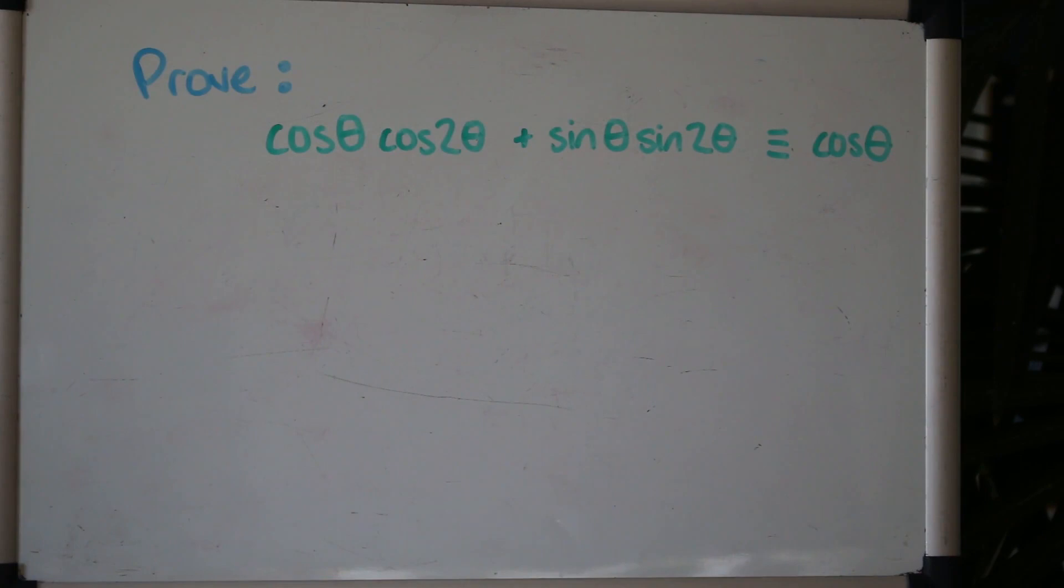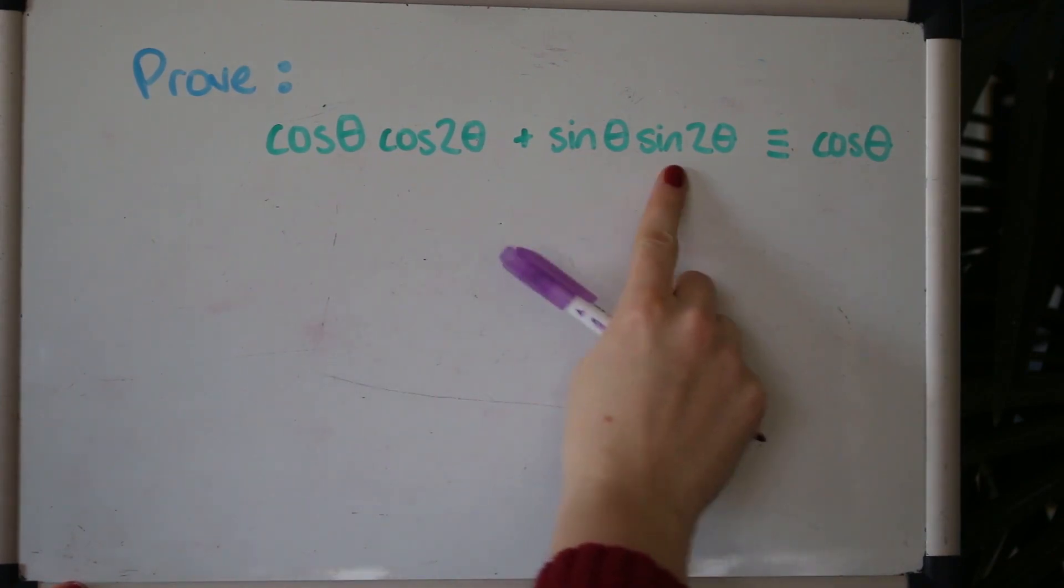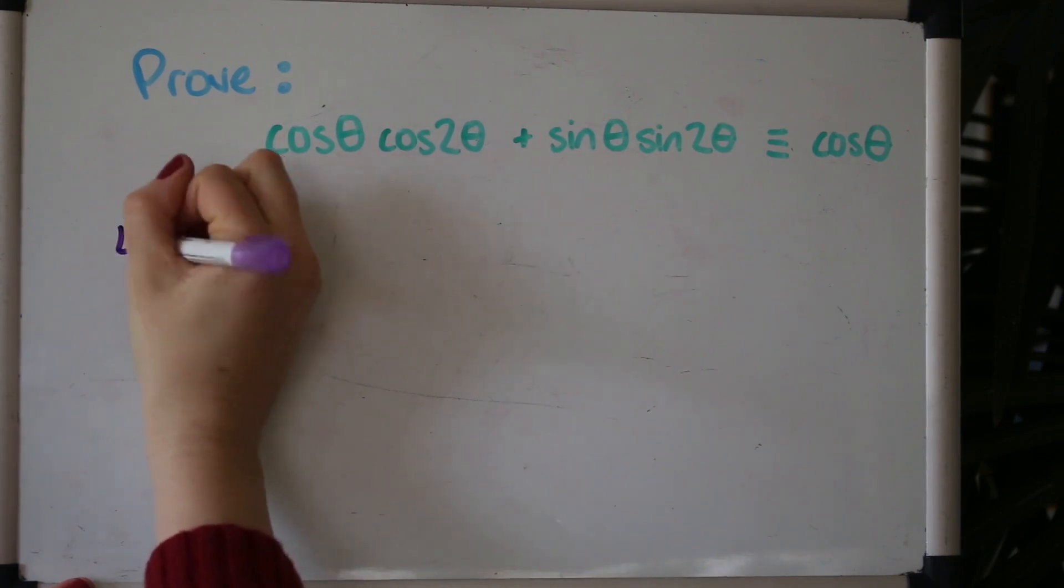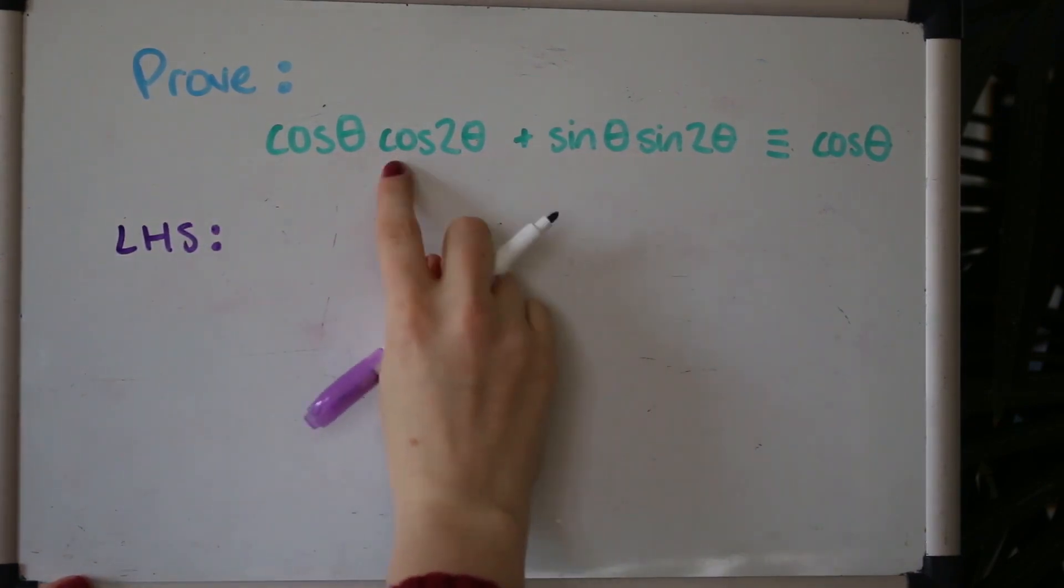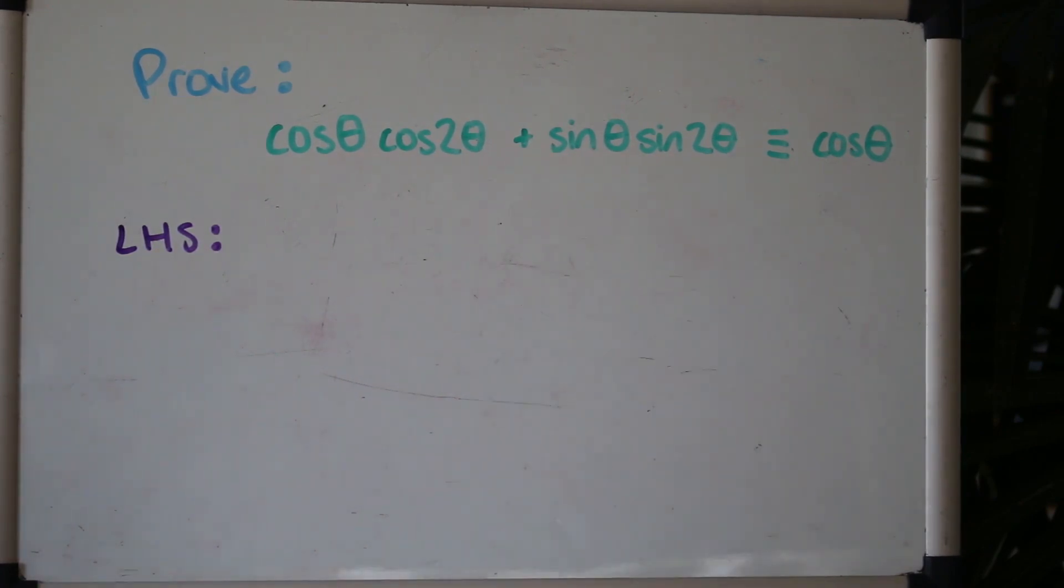I'm going to look at a couple of proofs now because these are quite common. And here we've got to get all of this down to just cosθ. So it makes sense to start with this side and unpack it. So I'm going to start with the left hand side and I'm going to apply the double angle formulae to both cos2θ and sin2θ. Have a go at that.